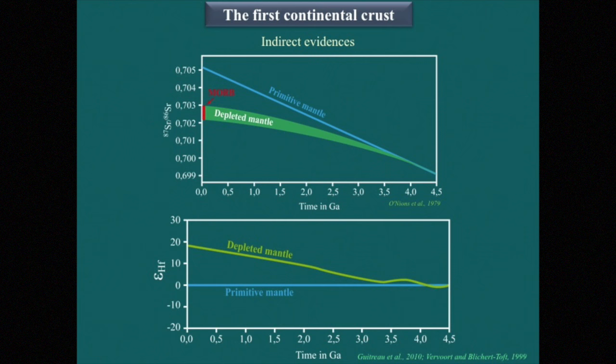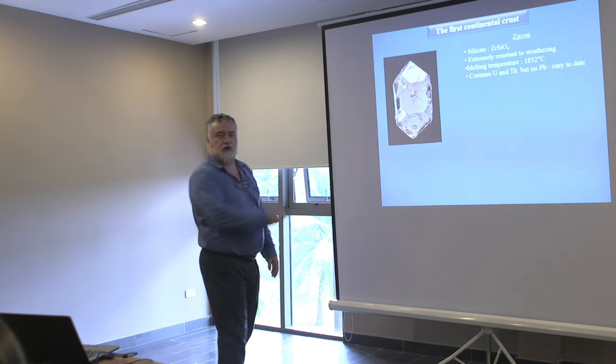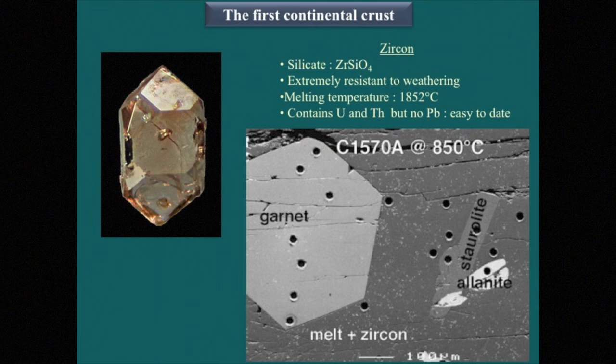Some proofs of this are given by zircon crystals. Zircon is a silicate of zirconium. It is extremely resistant to weathering — a very resistant mineral with a very high temperature of melting. Of course, it contains uranium and thorium but not lead, meaning this mineral is very easy to date.